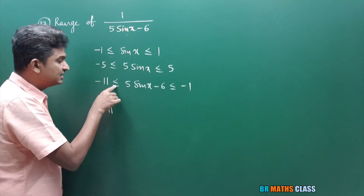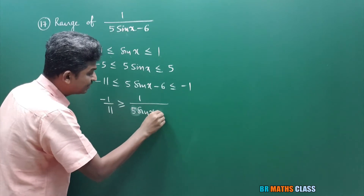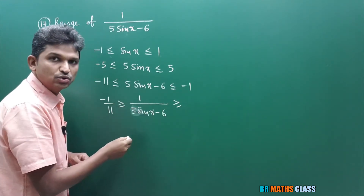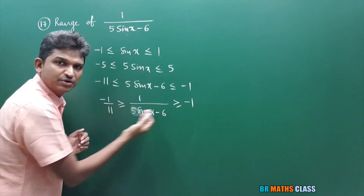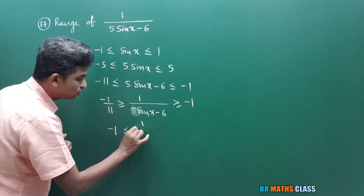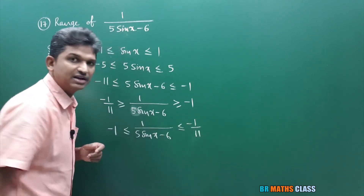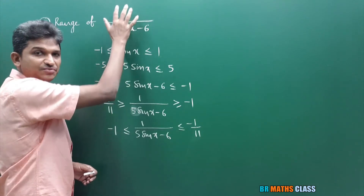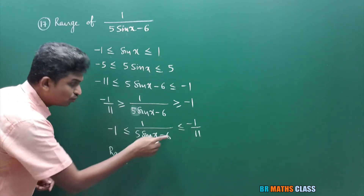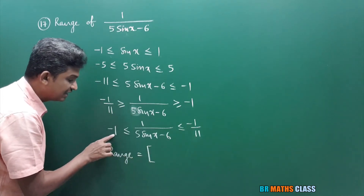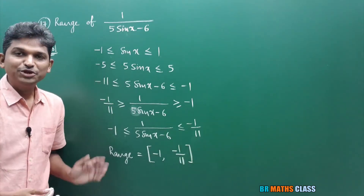As I write its reciprocal, the inequality sign changes. The reciprocal of minus 1 is minus 1, and the reciprocal of minus 1/11 applies as well. Writing from this end: minus 1 ≤ 1/(5sinx minus 6) ≤ minus 1/11. This value lies between minus 1 and minus 1/11. So the range of this function is the closed interval [minus 1, minus 1/11].